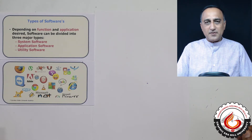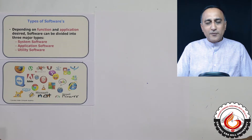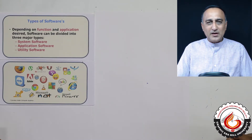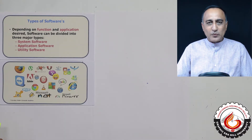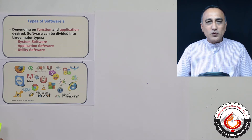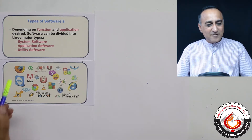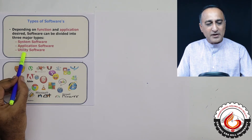In the last video lecture, I discussed a little bit about software and gave you a brief idea about hardware. Software is instructions plus data in a very simple language. Software, based on its relationship or how close it works with hardware, is classified into broadly three categories: system software, application software, and utility software.